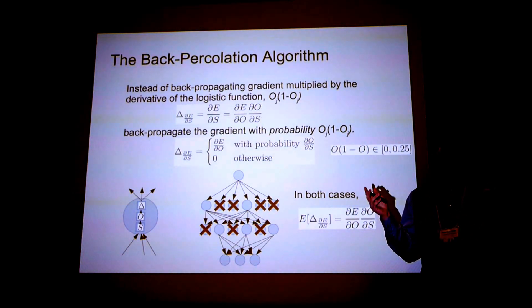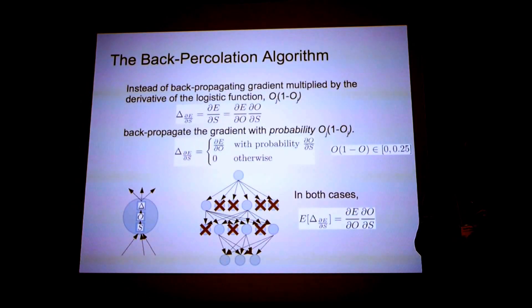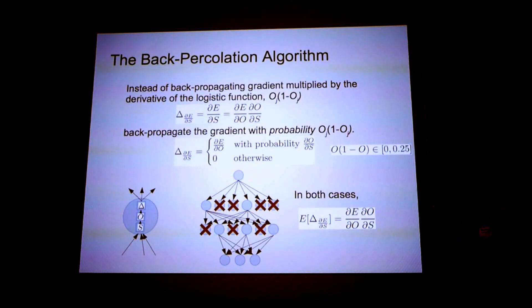And because the gradients, because this is all linear, the expectation of the weight update in the lower layers is going to be the true gradient, even though this is all stochastic.